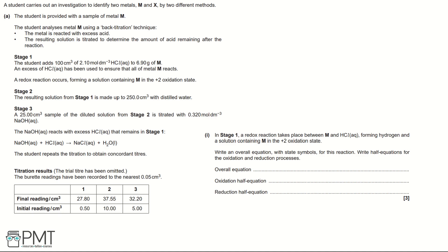Part 1: In Stage 1, a redox reaction takes place between M and hydrochloric acid, forming hydrogen and a solution containing M in the 2+ oxidation state. Write an overall equation with state symbols for this reaction, and write half equations for the oxidation and reduction processes.